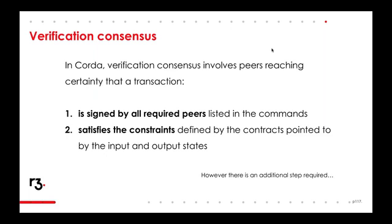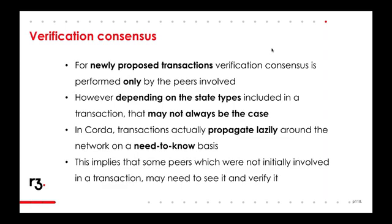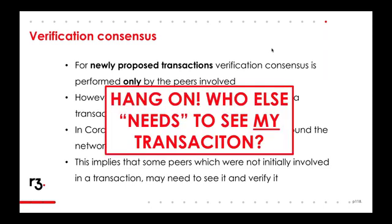However, there's another step required that we haven't talked about much yet: there may be a party that needs to verify a transaction that wasn't necessarily involved in the creation of that transaction — that is, they weren't a required signer, yet they still may need to see and verify it. For newly proposed transactions, verification consensus is only performed by the peers involved. However, depending on what type of states are involved, the transaction may need to be seen by other parties. This is why we say transactions propagate around the network on a need-to-know basis.